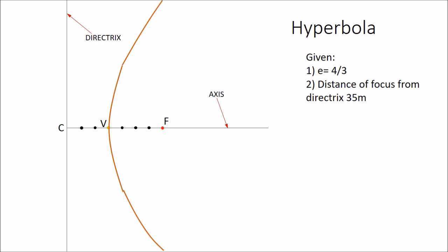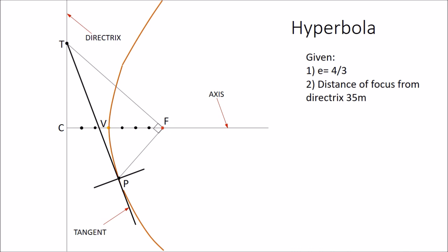Similarly, for a hyperbola, if you want to draw tangent and normal at a point P, join P with F, then draw a line perpendicular to PF which intersects the directrix at T. Join T with P and extend the line — this is your required tangent. At P, draw a line perpendicular to TP — this will be the required normal of the hyperbola.